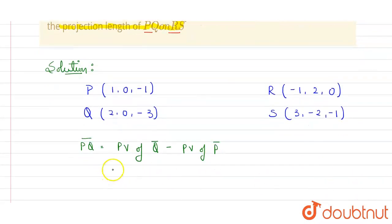position vector of Q minus position vector of P, backward minus forward. Position vector of Q is here. Look, 2 minus 1 will be 1, that is i cap. 0 minus 0 will be 0, plus 0 j cap and minus 3 and minus minus will become plus. Minus 3 plus 1, it will be minus 2 k cap.